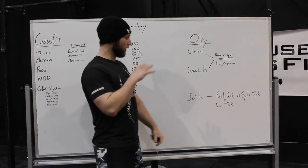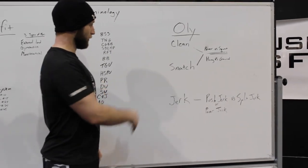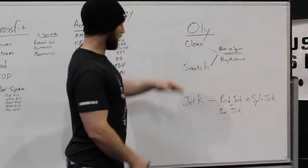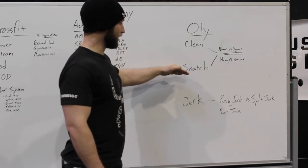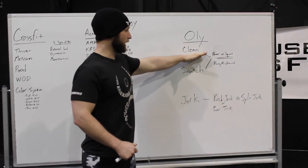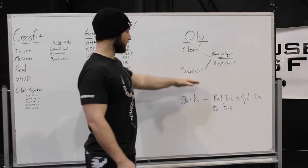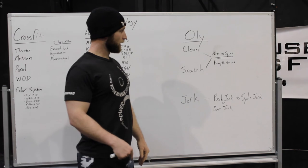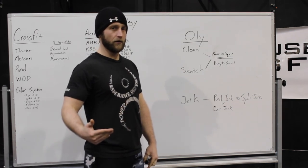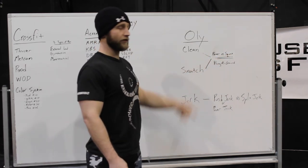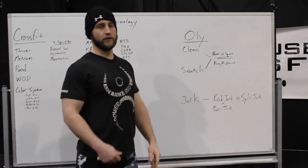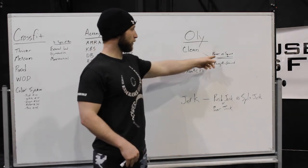Now the Olympic lifts — this is the big one where people get confused. The clean is ground to shoulders; the snatch is ground to overhead in one movement. If I just say 'clean' or 'snatch,' it's inferred you're going to squat with it — a full squat clean or full squat snatch. If I say 'power clean' or 'power snatch,' that means you catch it above parallel — you do not go into the full squat. Power equals above parallel.